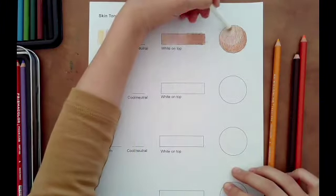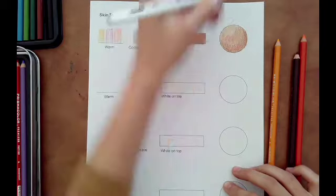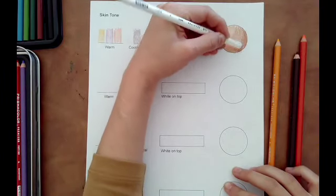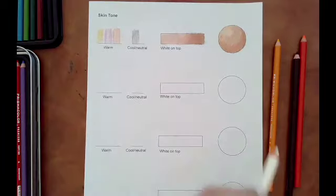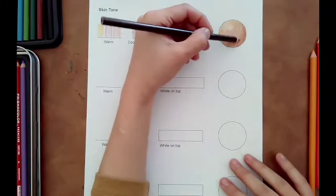So we're trying to make a skin tone sphere. Even after you've burnished with your white you can always go back in and make things darker if you feel like you don't have a big enough value range.